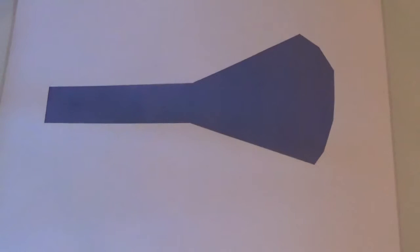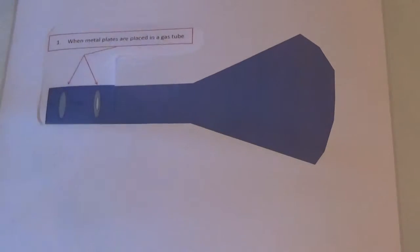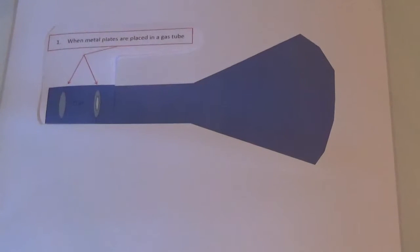The cathode ray tube, which is here, is made up of a tube filled with gas and a fluorescent coating. It also has two metal plates that fit inside the gas tube.